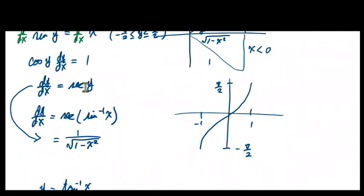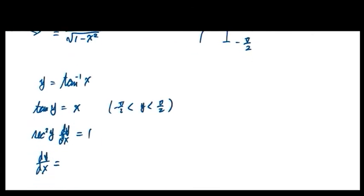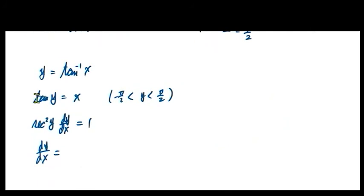The derivative of tangent is secant squared, so taking the derivative of both sides gives secant²(y) · dy/dx = 1. So dy/dx = 1/sec²(y) = cos²(y). Now let's use the triangle: tan(y) = x, so the opposite side is x, adjacent is 1, and hypotenuse is √(1 + x²).